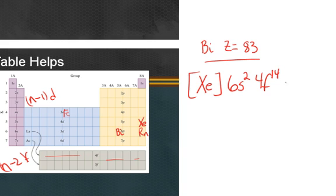And then pops you back up to the d, and you're going to be at the 5d. We're going to go all the way across the d, and fill that with 5d10. And then we're going to be back to the 6p, and it's going to be 6p3 on bismuth.